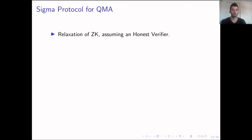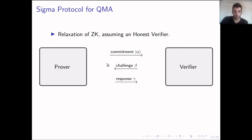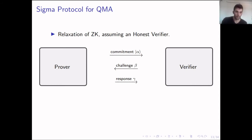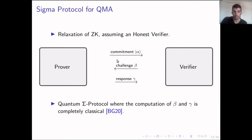I also need to introduce sigma protocols, a relaxation of zero knowledge that assumes an honest verifier. A sigma protocol has three messages: first the prover sends a commitment alpha, then the verifier sends a challenge beta, and then the prover sends his response gamma, persuading the verifier. We use a quantum sigma protocol introduced by Broadbent and Grilo, and a very important property is that the computation of beta and gamma is completely classical.